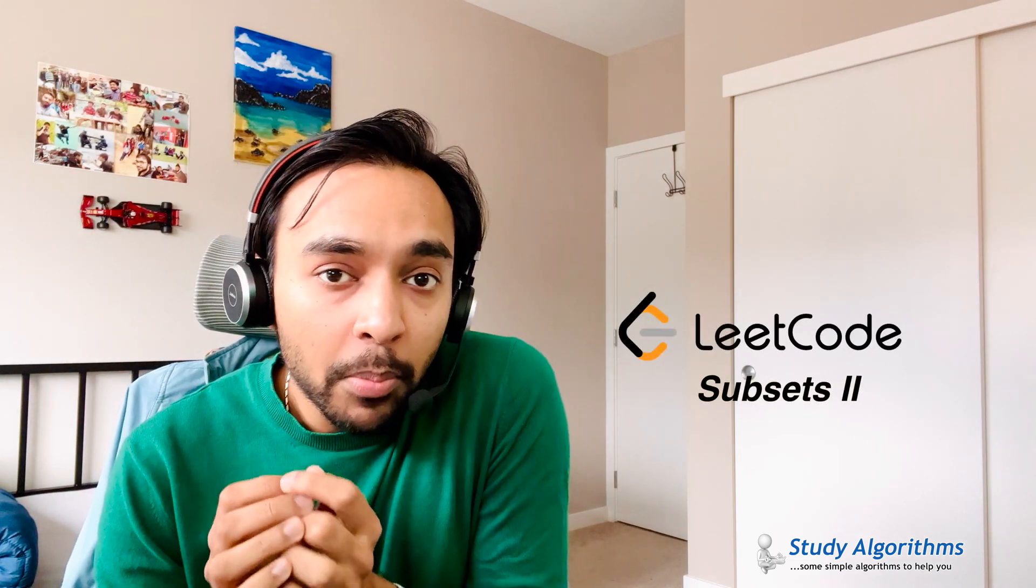Okay, this is gonna be a quick one as it is an extension of the original problem subsets. I am talking about the problem subsets 2 on LeetCode. You are given an array of integers and you have to find out all the possible unique subsets. But this time this array could have duplicates as well. You may notice that this problem is very similar to the original problem. So if you have not solved that first, I would recommend you to stop this video right over here and check out that original problem first. You can find the link in the description below. As per this problem, you need to make sure that you are removing all the duplicates. So let's see how we can go about doing that.